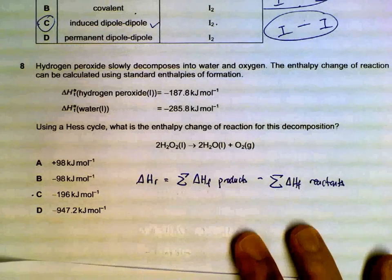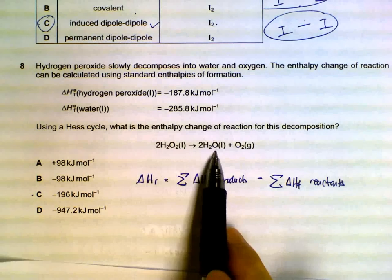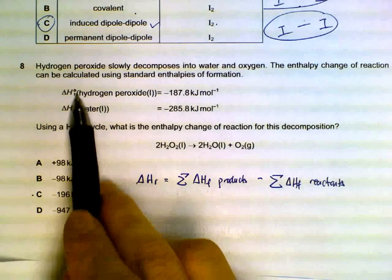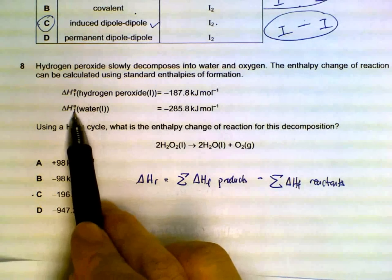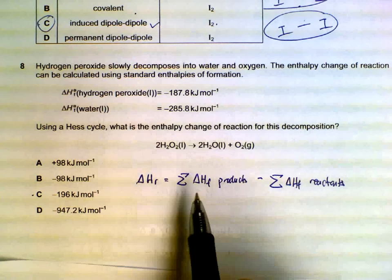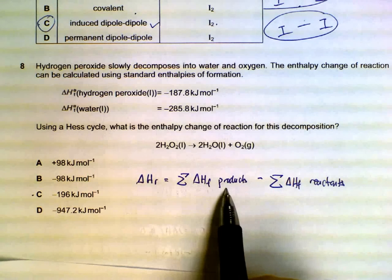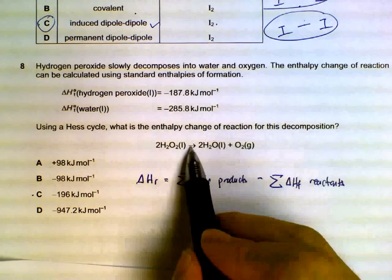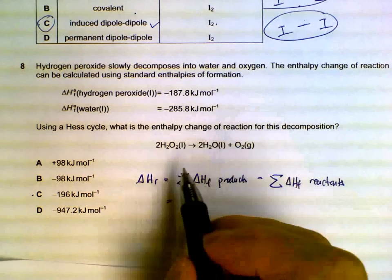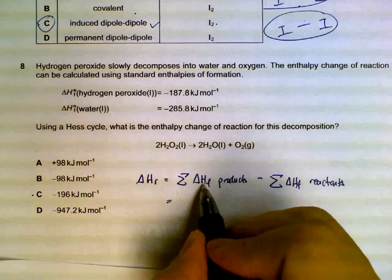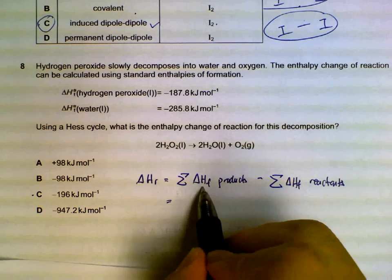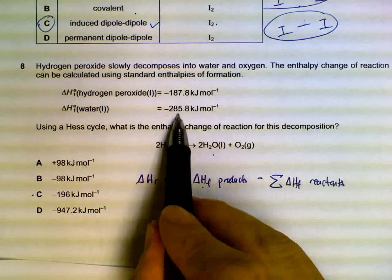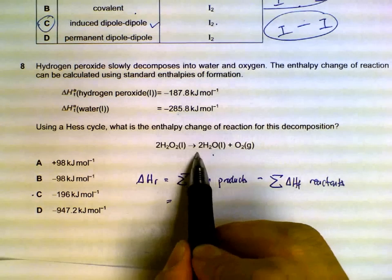Hydrogen peroxide decomposing, and we have this equation. What is the enthalpy change of reaction for this reaction? We have heat of formation provided for us. So in general, heat of formation of products minus heat of formation of reactants, we will get heat of reaction for the above reaction.